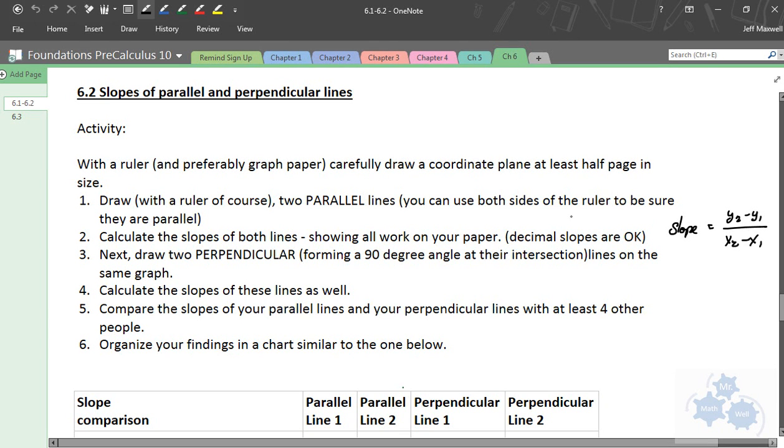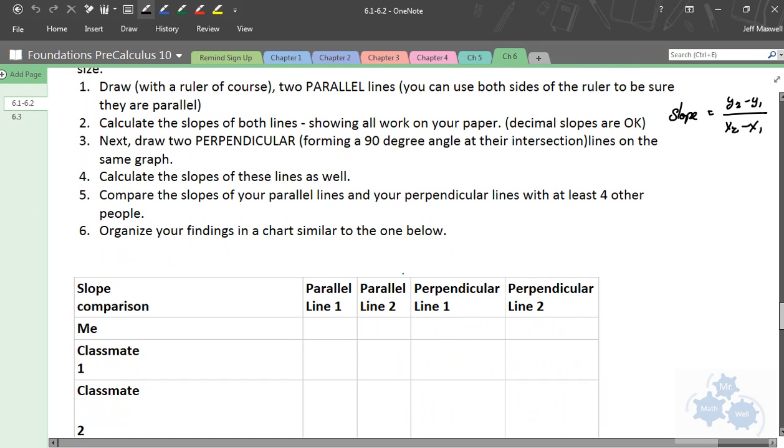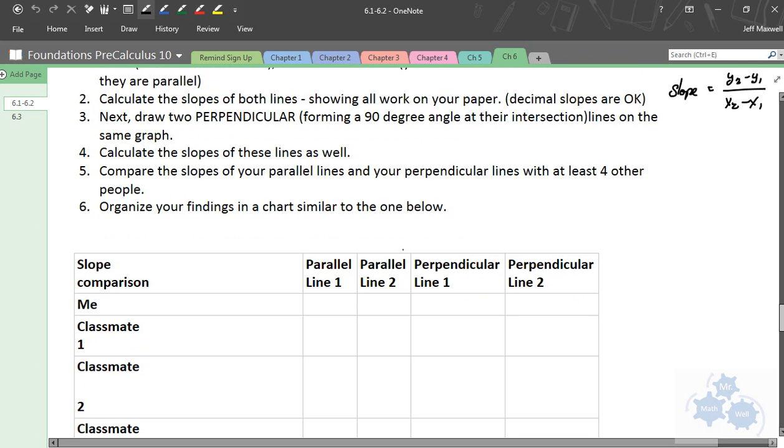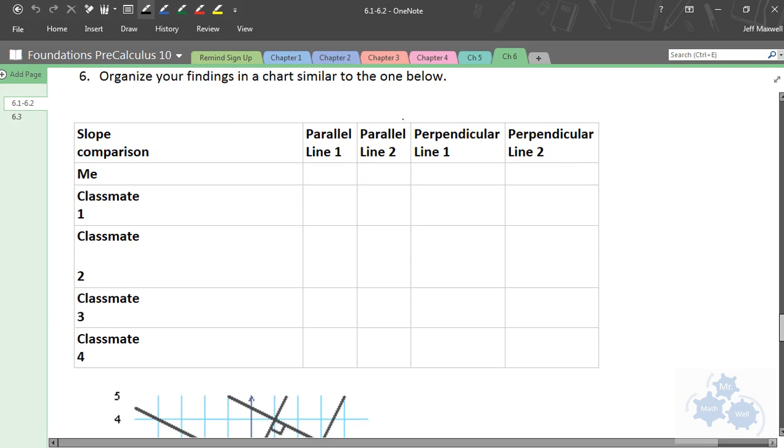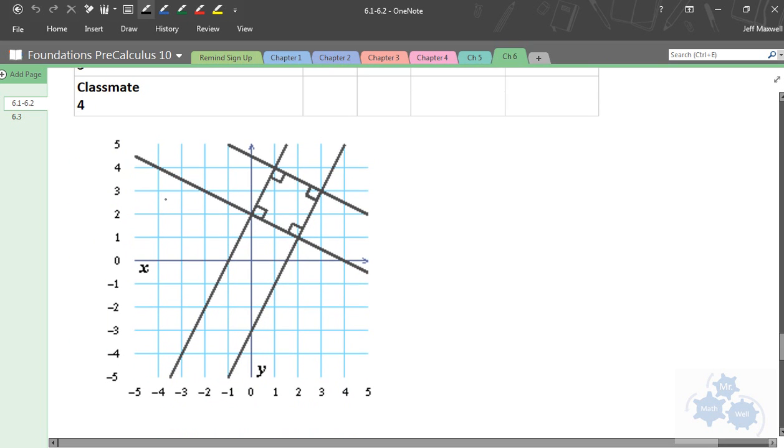Alright, in 6.2, this is just a quick summary of 6.2. Remember yesterday, guys, we did this activity where we drew two parallel lines and we drew two perpendicular lines. And what we were to do was to compare the slopes of those lines. We filled in this little chart here. And I have this diagram right here.